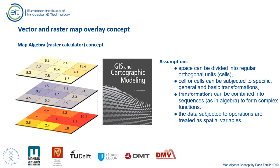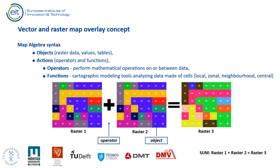The raster map overlay approach is based on the map algebra concept, proposed by Dr. Dana Tomlin. In essence, it is a set of simple operations in a GIS that allow two or more raster layers to produce a new raster layer using algebraic operations such as addition, subtraction, and division. The map algebra syntax comprises objects — usually raster data — and actions performed on a raster or between two or more rasters. Different types of operations can be used: arithmetic operations such as addition, subtraction, multiplication, and division; statistical operations such as minimum, maximum, average, or median; relational operations comparing cells using functions such as greater than, smaller than, or equal to; and trigonometric, exponential, and logarithmic operations.